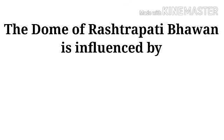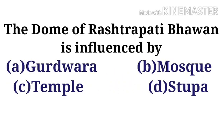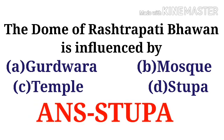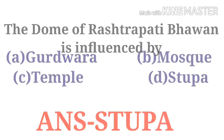The dome of Rashtrapati Bhavan is influenced by — the options are: option A: Gurdwara, option B: mosque, option C: temple, option D: stupa. The correct option is option D, stupa. Thank you friends for visiting my channel Unnati Ki Vani.